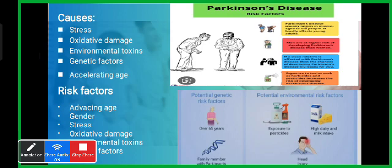The causes and risk factors that develop Parkinson's disease are not fully known. It is believed that a combination of genetic changes and environmental factors may be responsible. Causes include stress, oxidative damage, environmental toxins, genetic factors, and accelerating age.